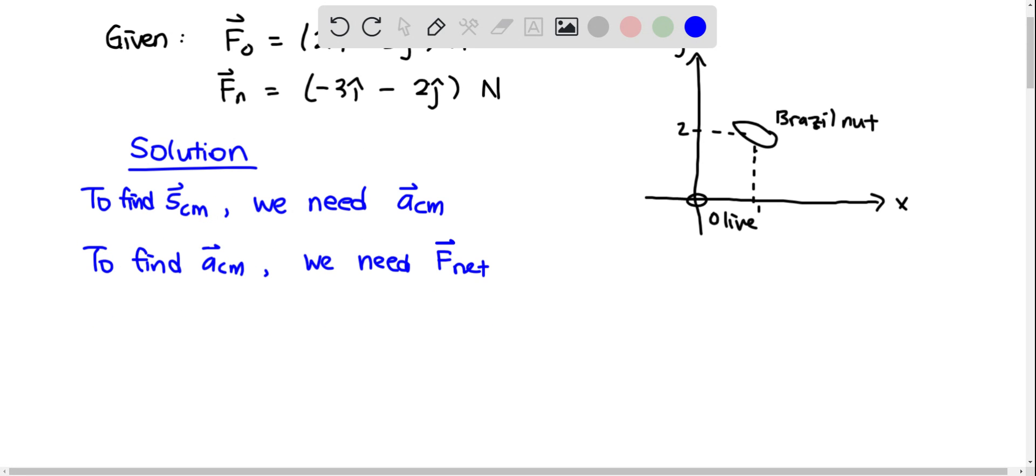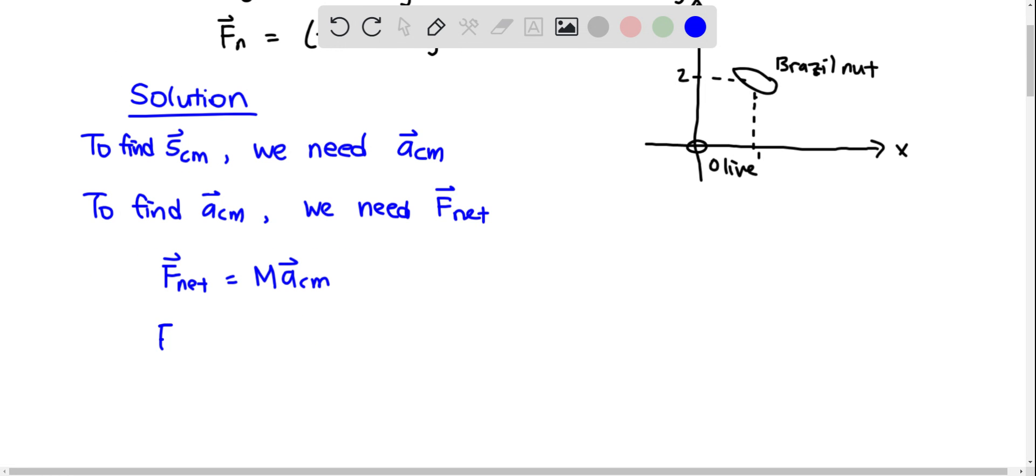So F_net is equal to M times A_CM, and at the same time, F_net is also equal to the summation of the forces acting on each particle. So it will be F_O plus F_N.